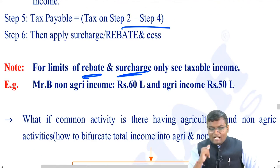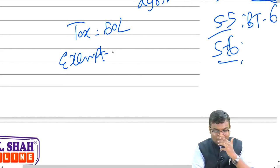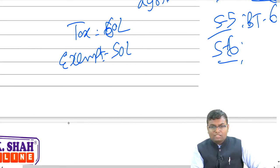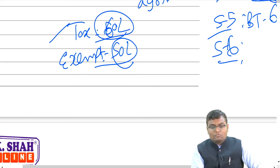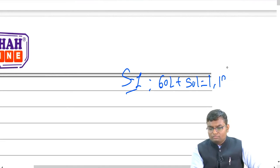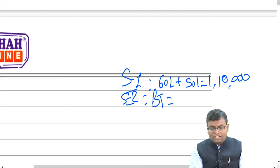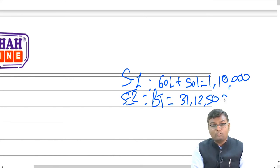One more example: Mr. B has non-agricultural income of ₹60 lakh and agricultural income of ₹50 lakh. Calculate tax payable. Taxable income is ₹60 lakh; exempt agricultural income is ₹50 lakh. He is an individual, agricultural income exceeds ₹5,000, total income exceeds basic exemption limit — partial merger is applicable. Step 1: ₹60 lakh + ₹50 lakh = ₹1 crore 10 lakh. Step 2: basic tax on ₹1.10 crore = ₹1 crore × 30% + ₹1,12,500 = ₹31,12,500.